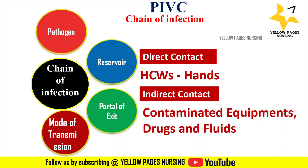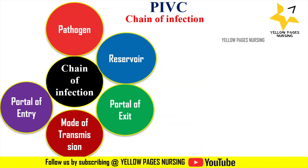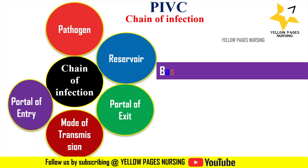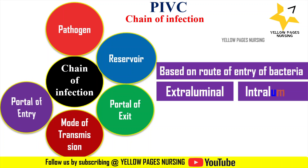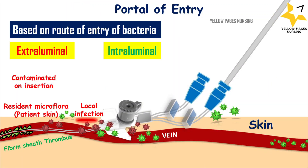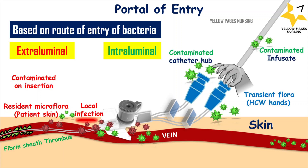Next comes portal of entry. In the chain of infection, it is based on the route of entry of bacteria — that is extraluminal and intraluminal. In extraluminal, bacteria migrate from skin along the catheter tract. In intraluminal, bacteria migrate from the catheter hub to the lumen and become embedded in a protein sheet.